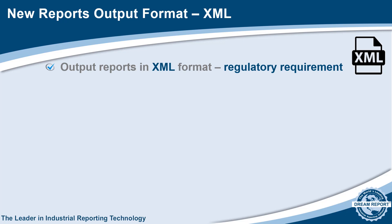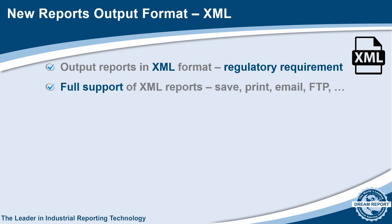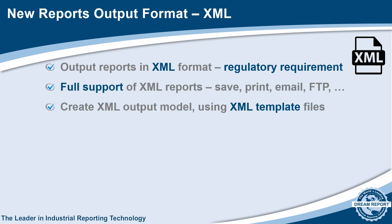In order to meet the regulatory requirements in several states of submitting water quality reports in XML format, DreamReport 5.0 now adds XML as a report output format, in addition to PDF, Excel, CSV, and HTML5. We've included full support for the XML output format, including saving to local or network drives, printing, emailing as attachments, and posting to an FTP server. Once the report has been configured, the XML output can be created from scratch, or you can import an XML template file — for example, as provided by the state — and then map the report objects and calculations into the XML document.